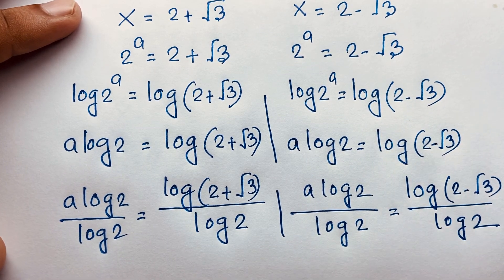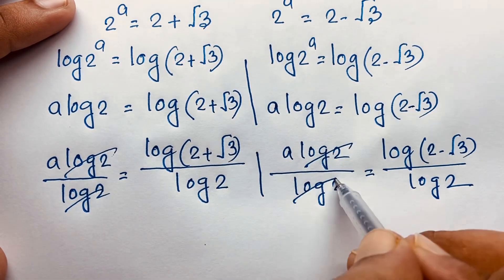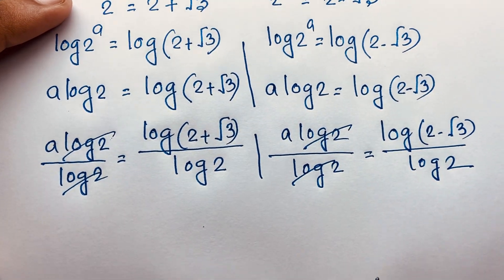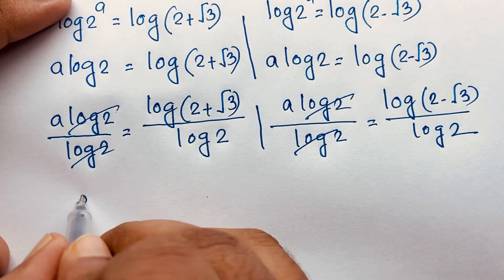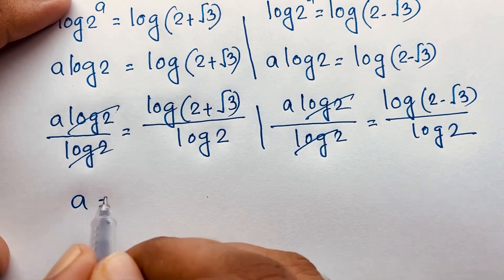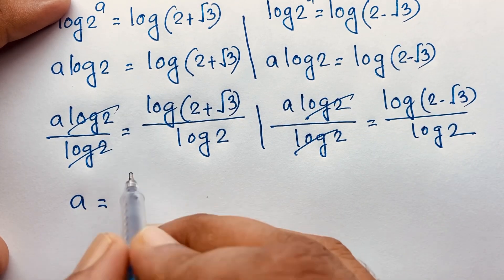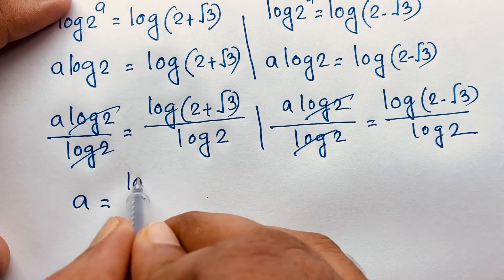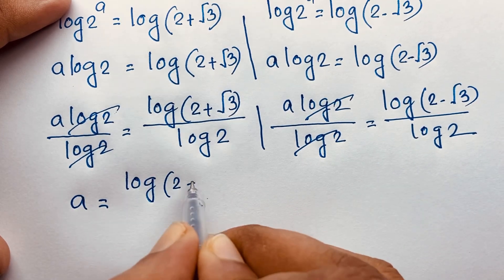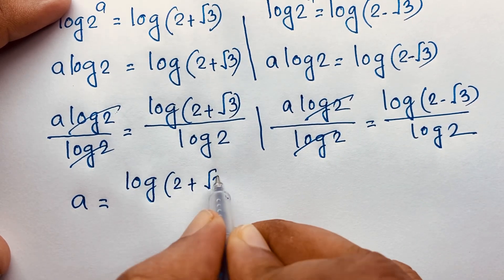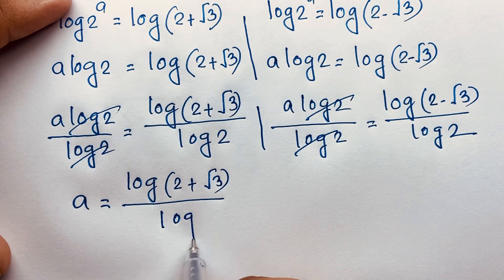The log 2 terms cancel out. Our final answer is a equals log(2 plus square root 3) over log 2.